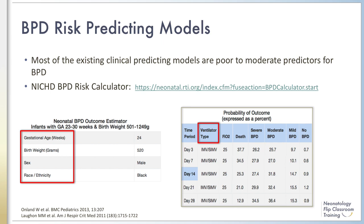This model calculates BPD risk at six postnatal ages, using gestational age, birth weight, race and ethnicity, sex, respiratory support, and FiO2. For example, a Black male infant born at 24 weeks gestation with a birth weight of 520 grams has a 25% risk of developing severe BPD if he is intubated on 25% oxygen on day one of life.